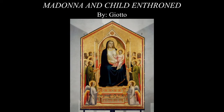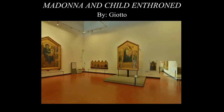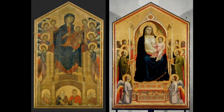We look at Giotto as one of the very first, if not the first, Renaissance artists, because his art is so incredibly different from Cimabue's. Here we have the altarpiece in the Uffizi Gallery in Florence — it's about ten to ten and a half feet tall, which you can see compared to the doorway at the lower right. Placing them next to one another is really important: as art historians, we love to compare and contrast objects to put them into context.